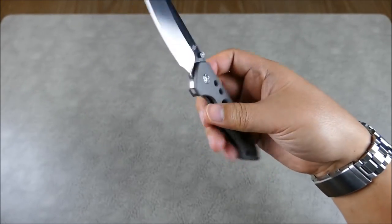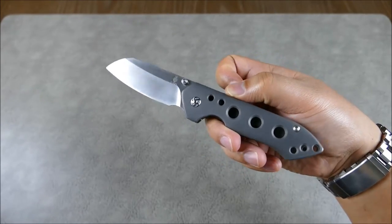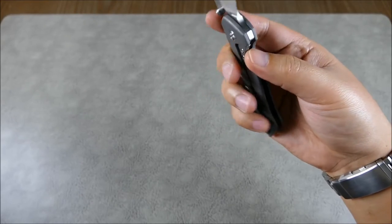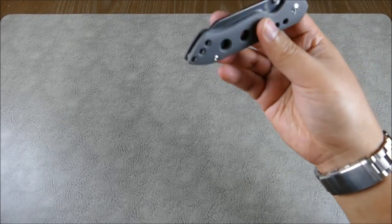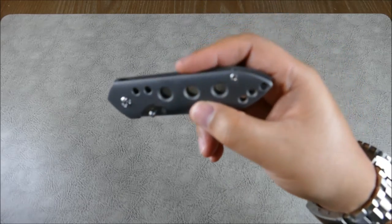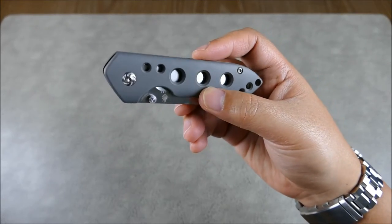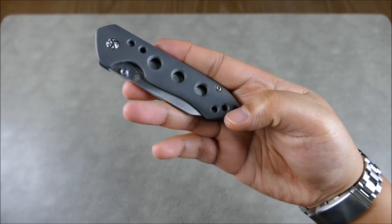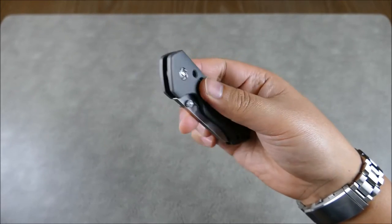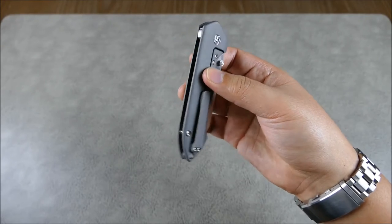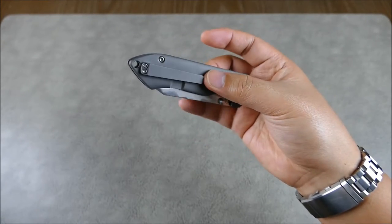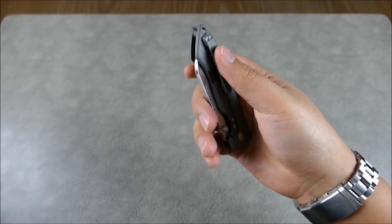The handle is titanium and bead blasted, and this particular option has the holes in there. So the really nice beveling on the holes there, nice contour on these handles, which is really nice to see. Also, a milled pocket clip very reminiscent of the Ursa Minor clip.